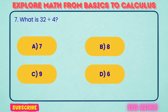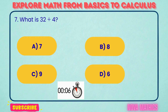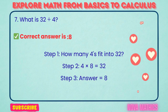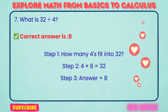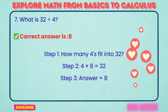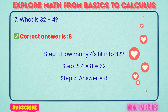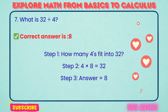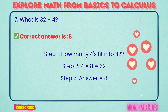7. What is 32 divided by 4? Correct answer is 8. 32 divided by 4 equals 8. We find this because 4 times 8 is 32.